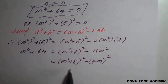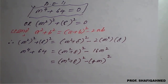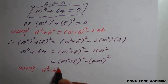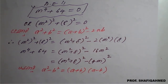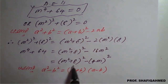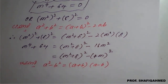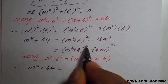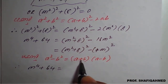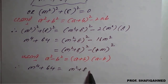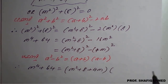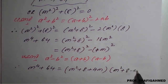Now you can observe this complete bracket is a square and this complete bracket is b square. Using the a square minus b square formula — a square minus b square is a plus b into a minus b — we apply this to the right hand side. So m raised to 4 plus 64 equals m square plus 8 plus 4m, times m square plus 8 minus 4m.